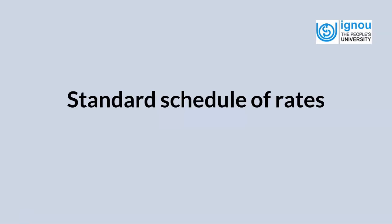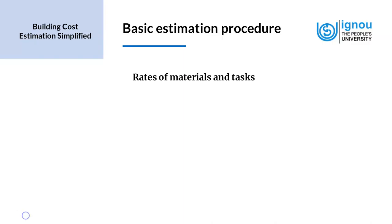First, we look at the concept of standard schedule of rates. How do we find the rates of materials and tasks? We know that during estimation, first we do the quantification of the work, and the next step is to find the expected estimated cost. For this, we apply the rates to the material and tasks, the quantity of material and tasks, and then we multiply them to get the final value.